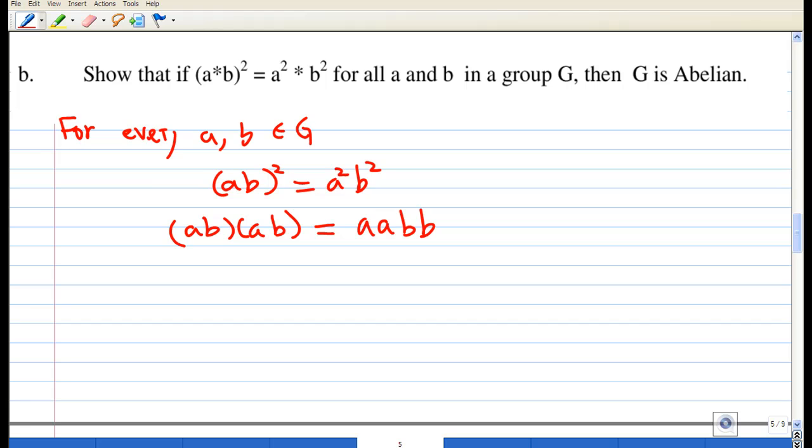Now I'm going to multiply both sides on the left by a⁻¹ and on the right by b⁻¹. So I multiply on the left side by a⁻¹, right side by b⁻¹.